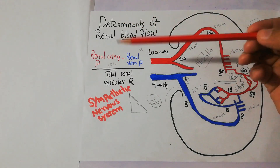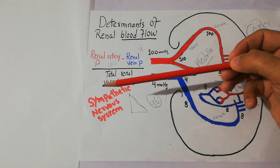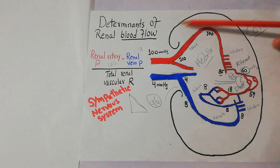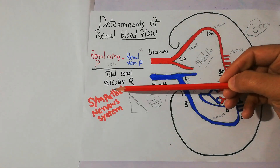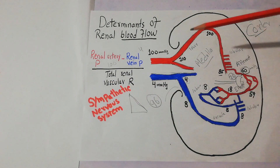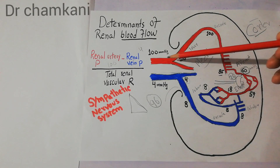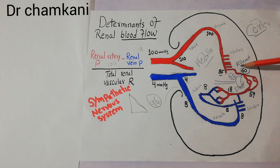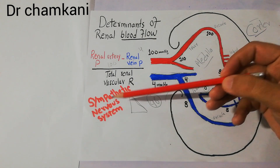One of the most important determinants of renal blood flow is the activation of the sympathetic nervous system. The kidney as a whole is richly supplied with the nervous system, especially the sympathetic nervous system. Each and every part of the renal vasculature, starting from the renal artery to the afferent arteriole and efferent arteriole, is richly supplied with the sympathetic nervous system.